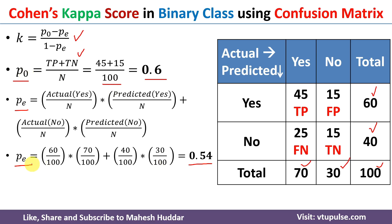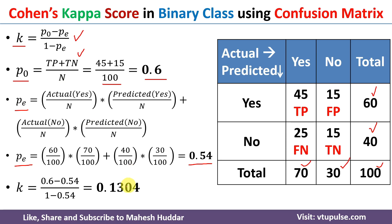Once we know p0 = 0.6 and pe = 0.54, we can calculate Cohen's kappa score by putting these values into the equation. Solving it gives a kappa score of 0.1304. It is slightly greater than 0, meaning there is approximately 13 percent agreement between the actual and predicted classes.